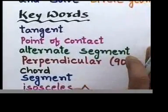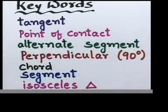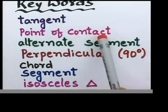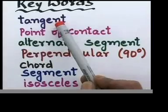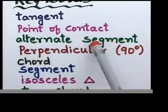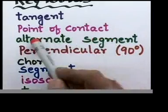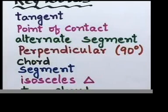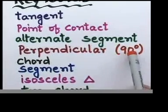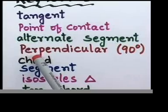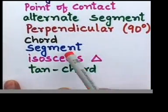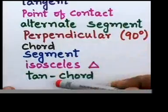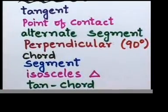Now look at the keywords you need to know for this lesson. The first one is 'tangent.' The second is 'point of contact' — these two are linked. The third is 'alternate segment.' Other important keywords are: right angle (90°), perpendicular, isosceles, and tan-chord. Watch out — I will be using these keywords when we solve the sums.